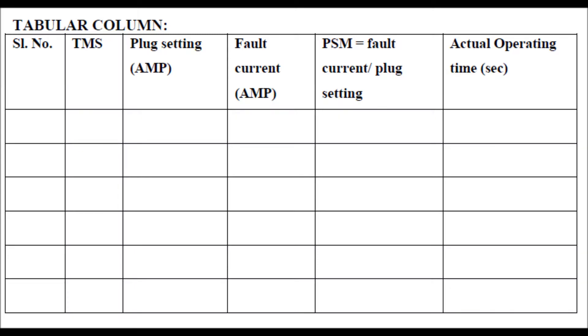Similarly we calculate the time setting multiplier or time multiplier setting and we tabulate the values. Whatever TMS we are keeping, whatever plug setting fault current is decided by us, we calculate the plug setting multiplier and note down the times.